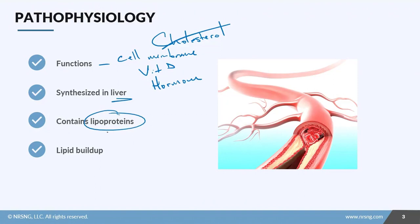Cholesterol is made up of subunits called lipoproteins. You have two of them: HDL, high density lipoprotein, and LDL, low density lipoprotein. The goals for your patient are to keep HDL greater than 60 milligrams per deciliter and to keep LDL less than 100 milligrams per deciliter.